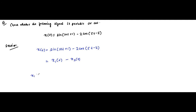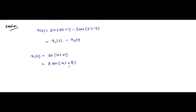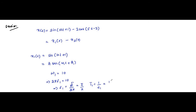Here X1(t) is equal to sin(10t + 1). If we compare it with the format A sin(ω1 t + φ), we are only interested in the angular frequency. ω1 is equal to 10, that implies 2π f1 equals 10, that implies f1 equals 5/π, and T1 is equal to 1/f1 which equals π/5 seconds. This is the time period of the first signal.